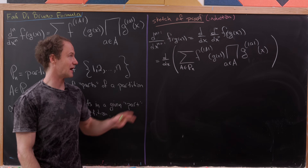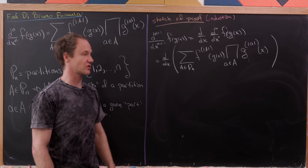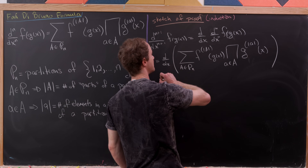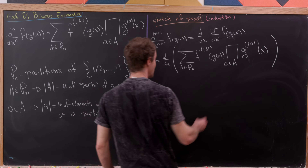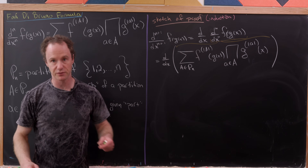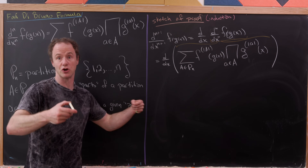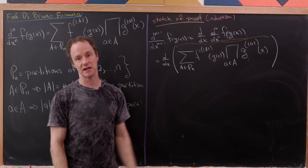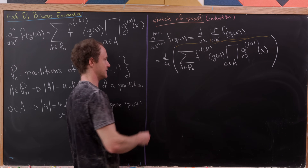For the induction step, we take the (n+1)-th derivative of f(g(x)), which equals the derivative of the nth derivative of f(g(x)). We can write that nth derivative using the formula, because in an induction proof we're assuming we're good up to a point and then bridge to the next case. Now I'll take the derivative of this expression, but notice we have a big product, so we have to use the product rule.